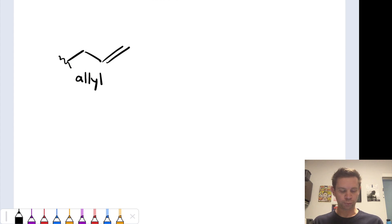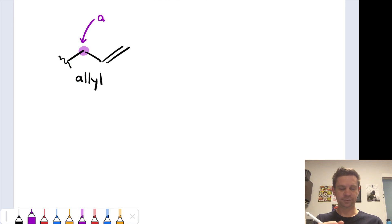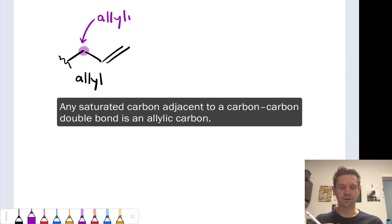The CH2 group within the allyl group is in a particularly special position known as the allylic position. As we'll see in this video, cations, anions, and radicals are stabilized at this position.